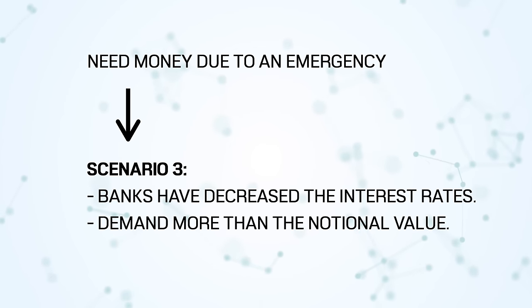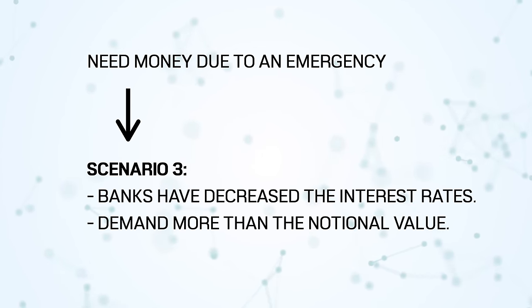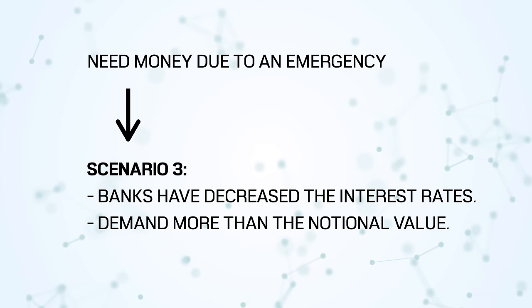So depending on the interest rate in the economy, the actual value of the FD may be more than 1 lakh 7000 or less than 1 lakh 7000. If the interest rate goes down, actual value increases. If it goes up, actual value goes down. Normally this doesn't happen with FDs, but this is exactly what happens with bonds. If you invest in government securities and interest rates go down, you can sell the bond at more than 7% profit. If interest rates go up, you won't even get back the notional value.